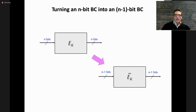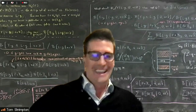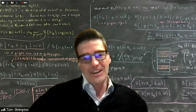Now the first problem: turning an n-bit block cipher into an (n−1)-bit block cipher. The obvious idea is to truncate. Define the output as the n−1 least significant bits of the n-bit cipher run on input x. But this is obviously wrong syntactically — x here is 128 bits, and you need a 127-bit input.